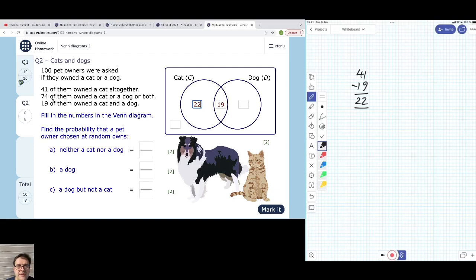Okay, now we can think about the 74 people that own a cat or a dog or both. So there's 74 people in the union of the two circles. And we know that 41 of them are here—22 plus 19, 41 that own a cat. So if you subtract the 41, you're left with the 33 over here that just own a dog. So it's just a question of placing the information in the Venn diagram in the right order and having to deduce a couple of things.